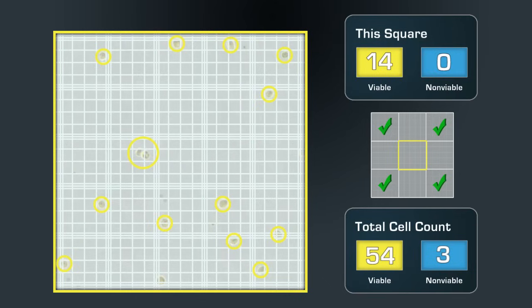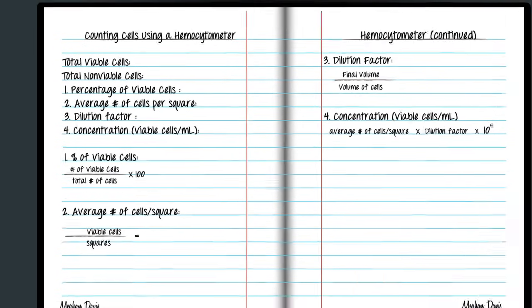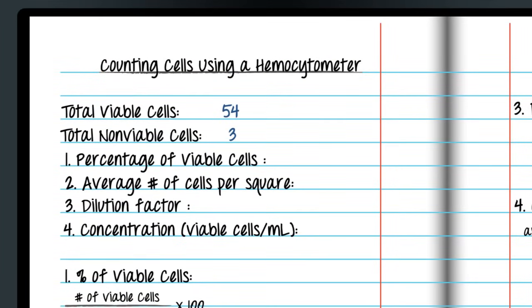There are 14 viable cells and no non-viable cells in the center square. The total number of viable or living cells from all five squares is 54. The total number of non-viable cells is 3.